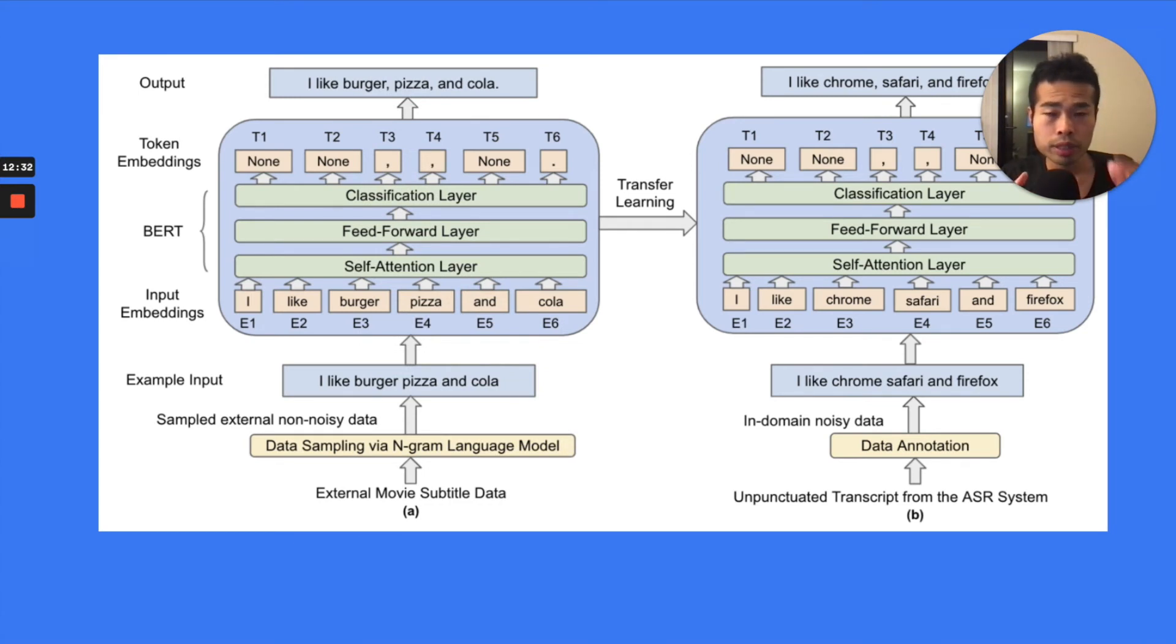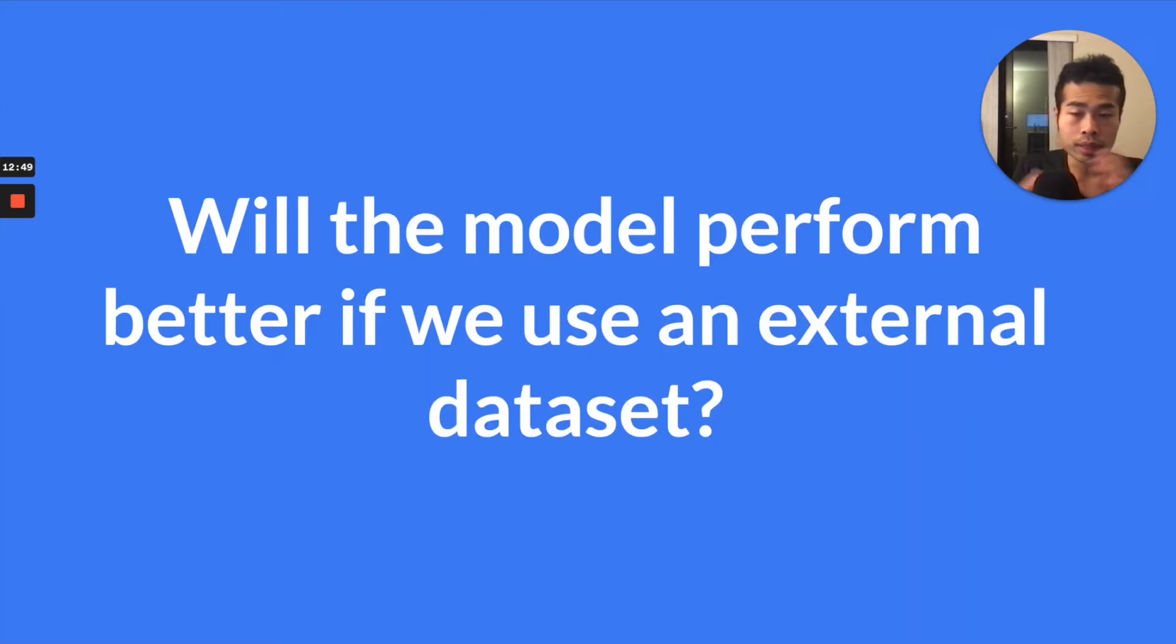So what we do is we fine-tune our model first on this selected external movie subtitles. Then in the second stage, we fine-tune on our 320,000 in-domain human annotated data. Then we find out they actually improve the model quite a lot.